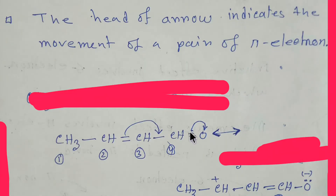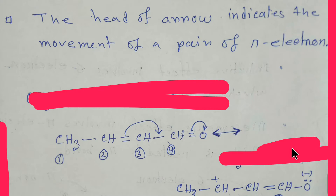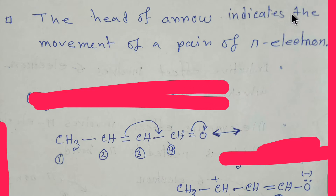Consider a compound with pi electrons moving through conjugated double bonds — that means alternating single bond, double bond, single bond, double bond. This arrangement is called a conjugated double bond, and a compound with this pattern is called a conjugated compound. The head of the arrow indicates the movement of the pair of pi electrons.